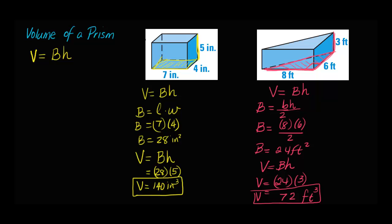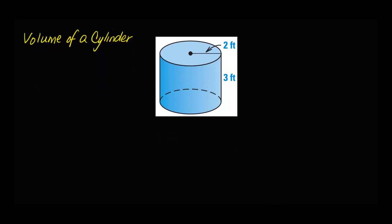Now let's look at the volume of cylinders. For the volume of a cylinder, the formula is exactly the same as the one we used for prisms: it's the area of the base times the height. Notice that the base for a cylinder is a circle, and the circle has its own formula for area. This circle right here is the base. Remember that for cylinders and for prisms, the bases are congruent. B, which is the area of the base, is going to be pi r squared.